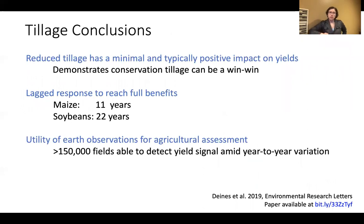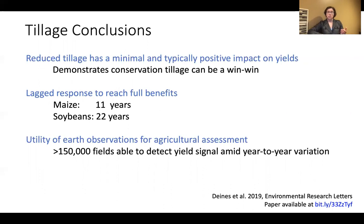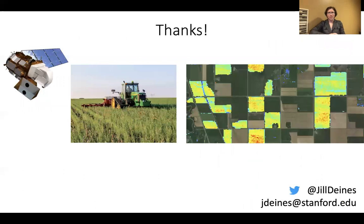In conclusion, we found that reduced tillage has a minimal and typically positive impact on yields, demonstrating that it can be a win-win for agriculture. We also found a lag response to reach full benefits and overall demonstrated the utility of earth observations for agricultural assessment. Because we had a large field data set, we were able to detect this relatively small yield signal amid year-to-year variation. Thank you for your attention — I look forward to the question period, and feel free to email me or find me on Twitter.